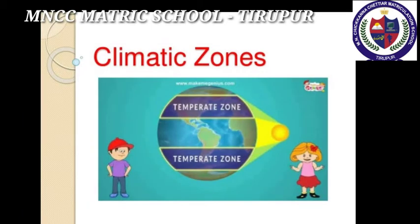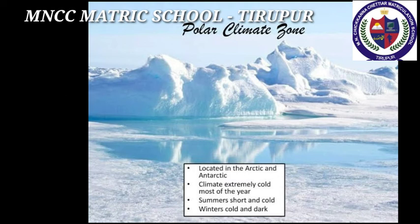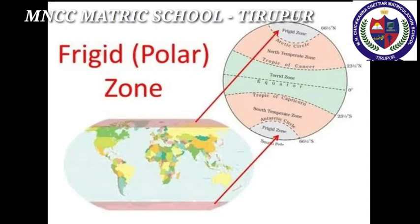Temperate zone: this zone lies between the Tropic of Cancer and the Arctic Circle in the Northern Hemisphere. It gets the slanting rays of the sun and the angle of the sun rays goes on decreasing towards the poles, thus this zone experiences moderate temperature. Frigid zone: since it receives extremely low temperature throughout the year, these regions are covered with snow. The frigid zone lies between the Arctic Circle and the North Pole, and between the Antarctic Circle and the South Pole.